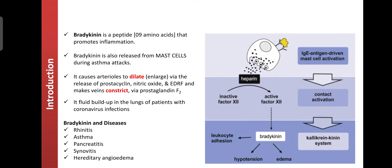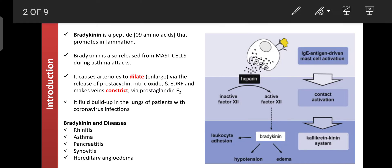Bradykinin mainly promotes inflammation by increasing the accumulation of fluid at the site of injury. Bradykinin is mainly released from the muscles during an asthma attack, where muscle cells are sensitized by antigen IgE, causing bradykinin to be released along with prostaglandins, angiotensin, kinins, and other autacoids like serotonin.